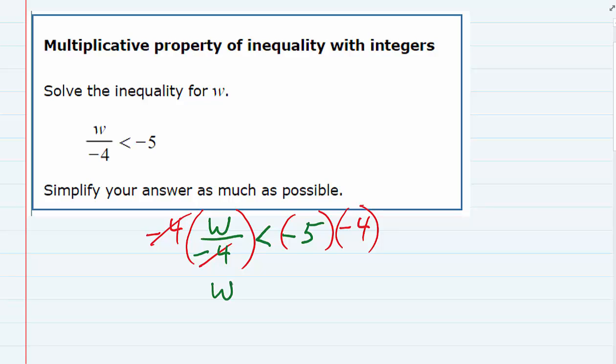And on the right, the negative 5 times the 4, negative times a negative, gives me a positive 20.